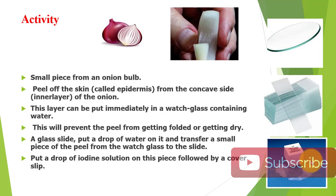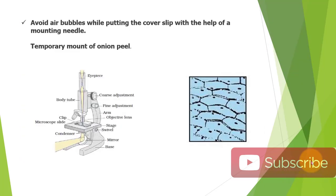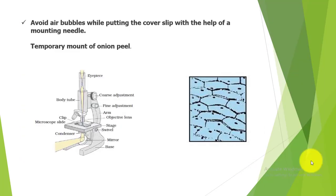This is our temporary slide of the onion peel. We will observe it under the microscope to see the compartments, similar to what Robert Hooke saw in cork. An important precaution: there should be no air bubbles while placing the cover slip. With the help of a mounting needle, we carefully prepare this temporary mount.